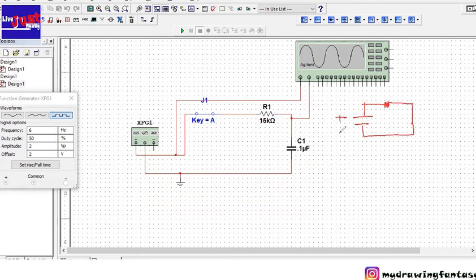So the equation for the capacitor discharging will be V(t) is equal to Vi into e to the power minus t over tau. The tau is the time constant which is equal to R